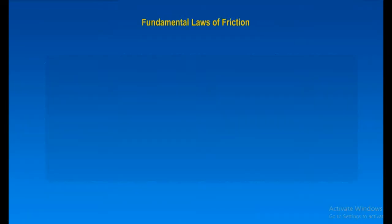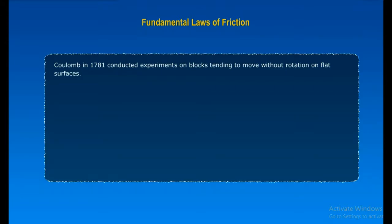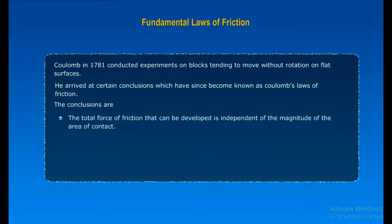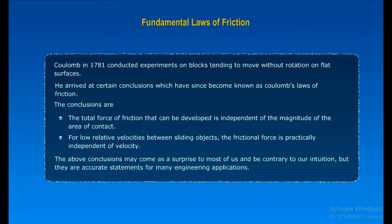Fundamental laws of friction. Coulomb, in 1781, conducted experiments on blocks tending to move without rotation on flat surfaces. He arrived at certain conclusions which came to be known as Coulomb's laws of friction. The conclusions are: The total force of friction that can be developed is independent of the magnitude of the area of contact. For low relative velocities between sliding objects, the frictional force is practically independent of velocity. The above conclusions may come as a surprise to most of us and be contrary to our intuition, but they are accurate statements for many engineering applications.